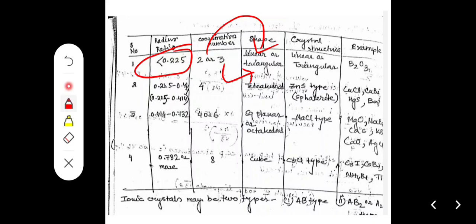If the radius ratio is between 0.225 and 0.414, the coordination number is 4 and the shape is tetrahedral. The crystal structure is zinc blende (ZnS type, sphalerite structure). Examples include CuCl, CuBr, HgI, and so on.